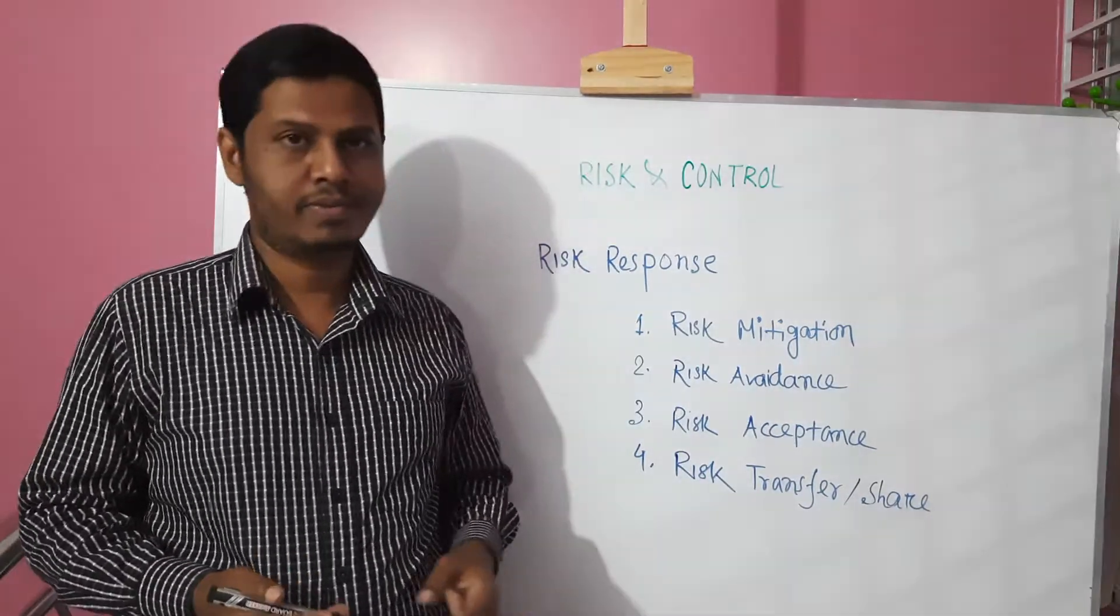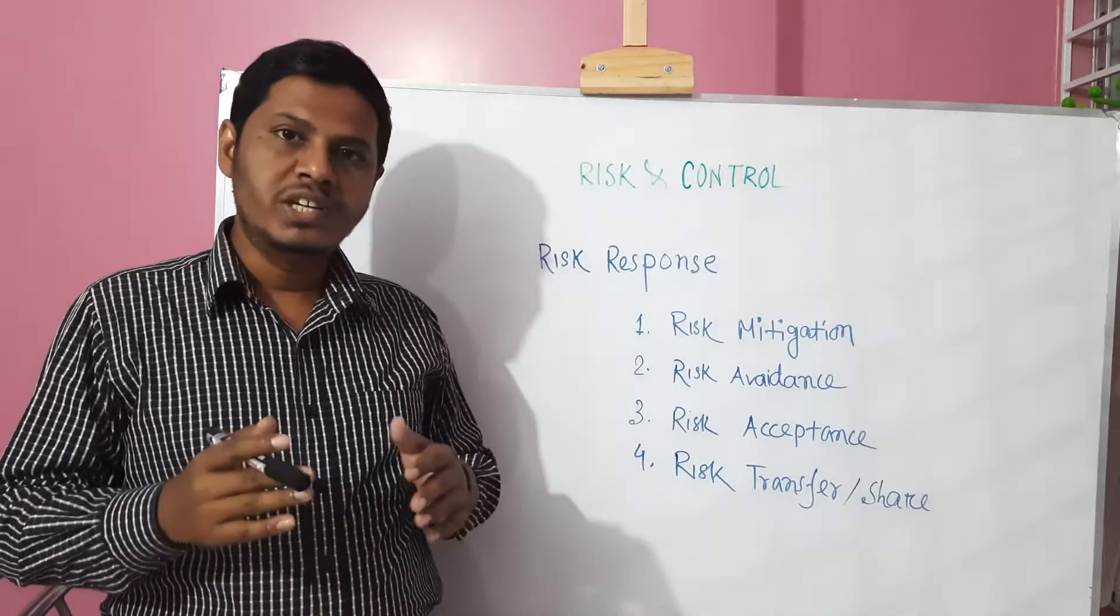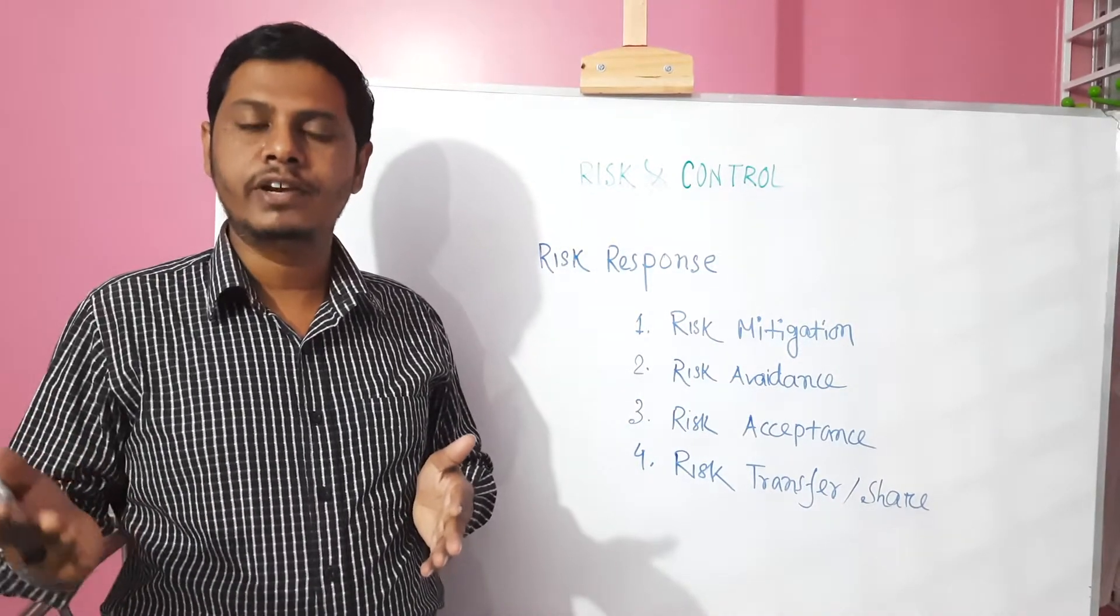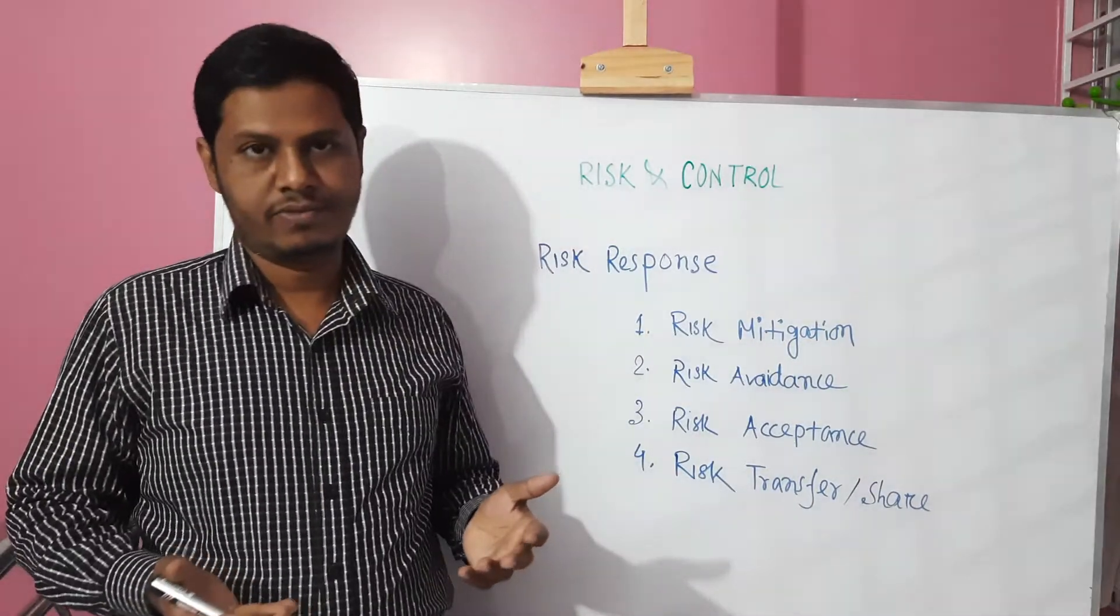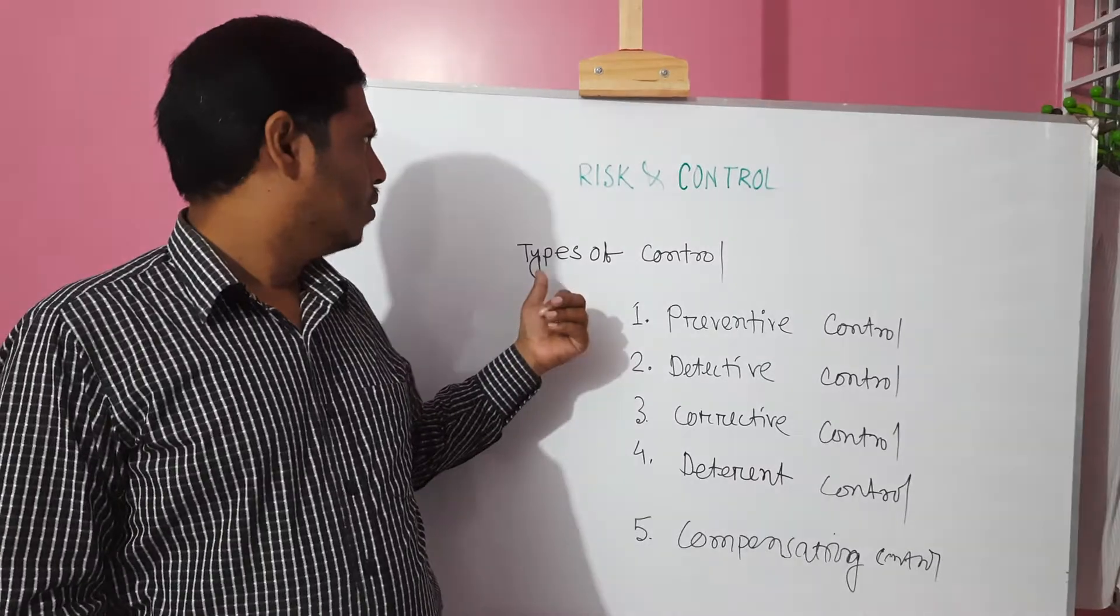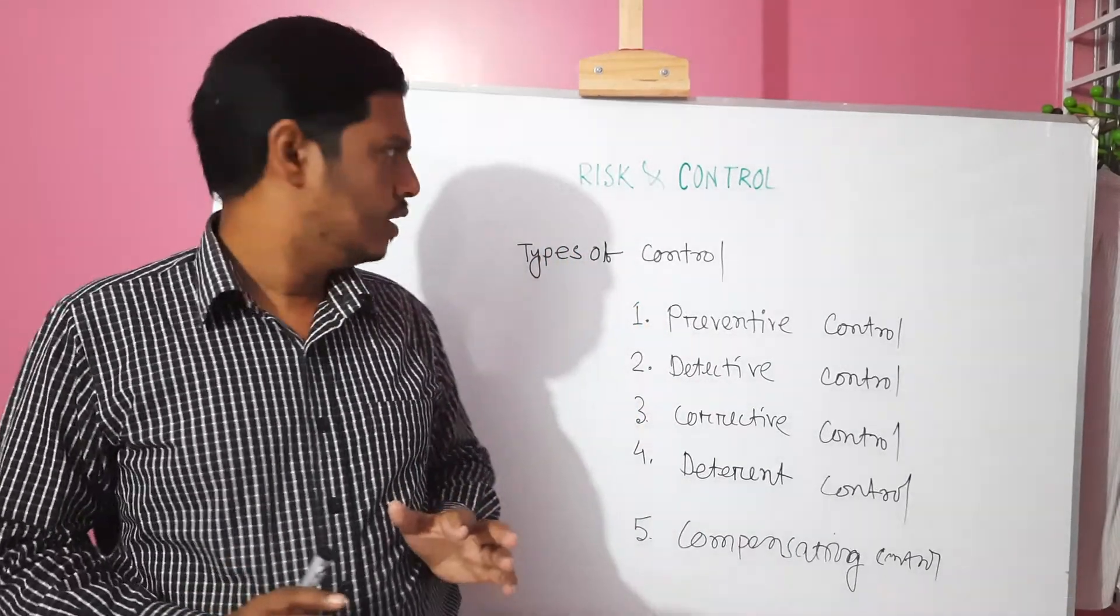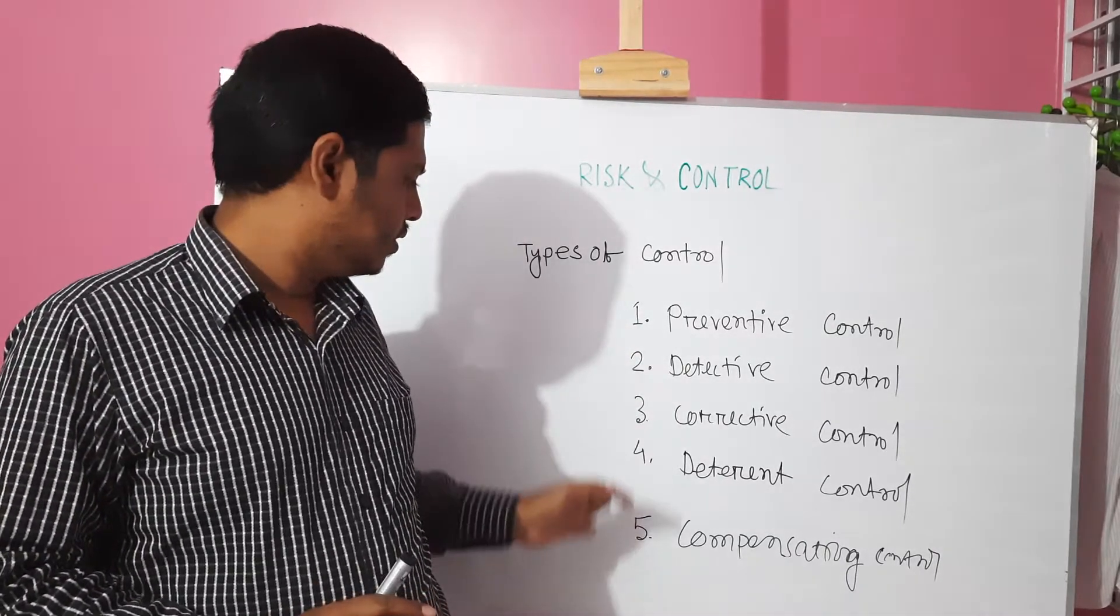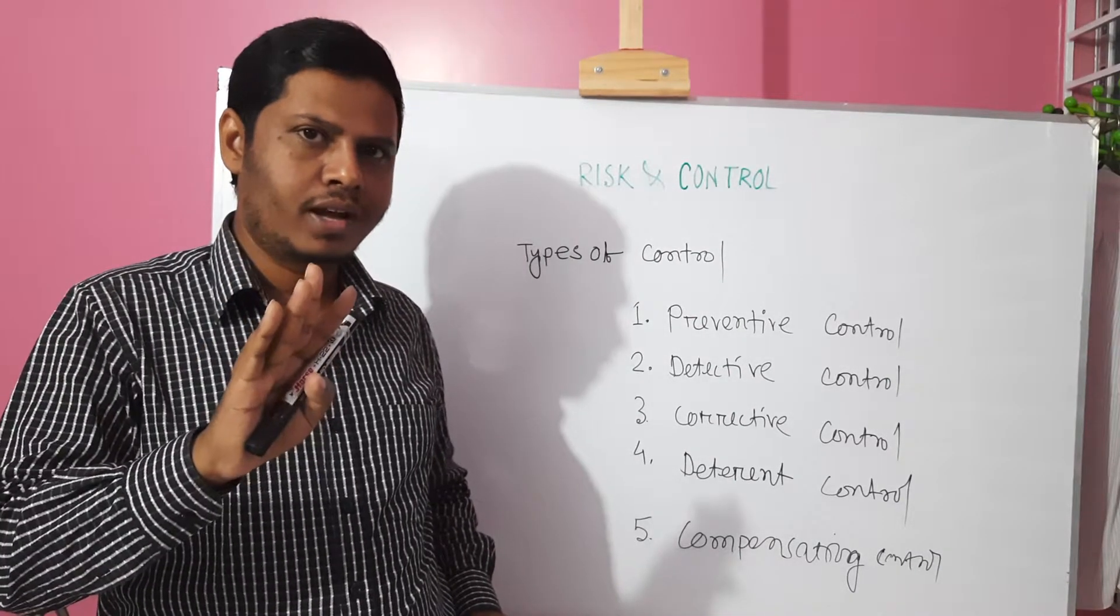And finally, risk transfer. Actually, risk transfer means we share the risk to our third party, our vendor, or insurance is the best example of risk transfer. To mitigate the risk, we apply different types of control. And if we say different categories of control, there are main five categories of control available.